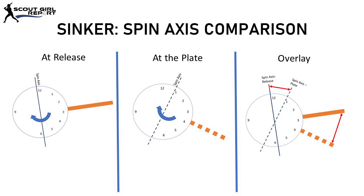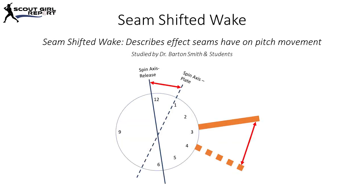That idea is called seam shifted wake. I've written about seam shifted wake before — it was a video about Alec Manoa back in 2021. All it describes is the effect that the seams have on pitch movement that causes the spin axis to shift mid-flight, leading to varying — and late, unexpected — movement by the time it crosses the plate. It's very difficult for a hitter to anticipate and make quality contact on such pitches. We can't confirm Cano's sinker has this, but when you see such a dramatic difference — almost an hour shift in the spin axis — seam shifted wake is likely a factor.